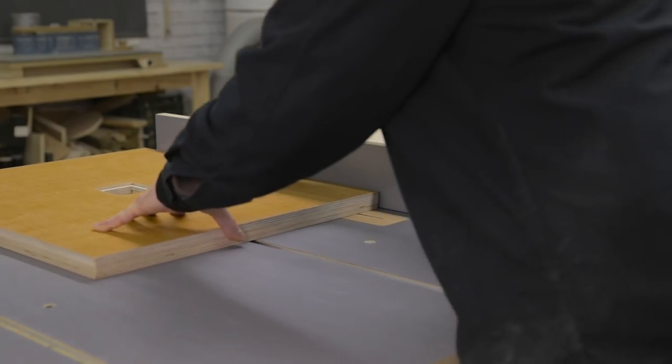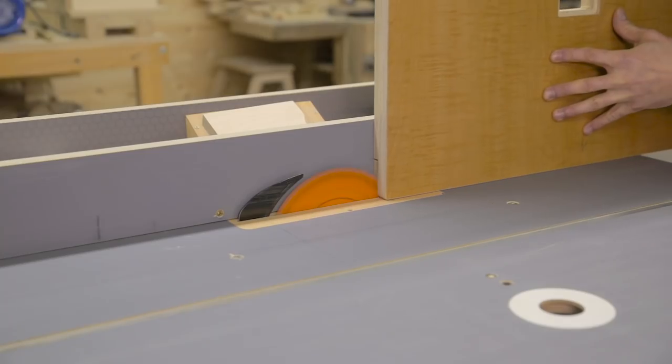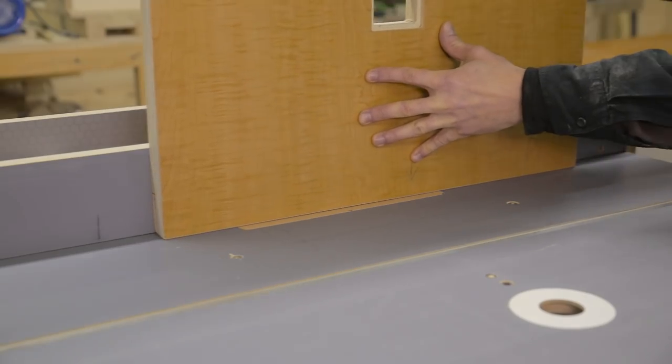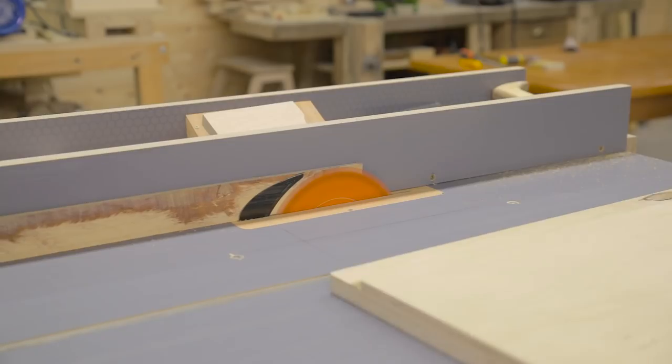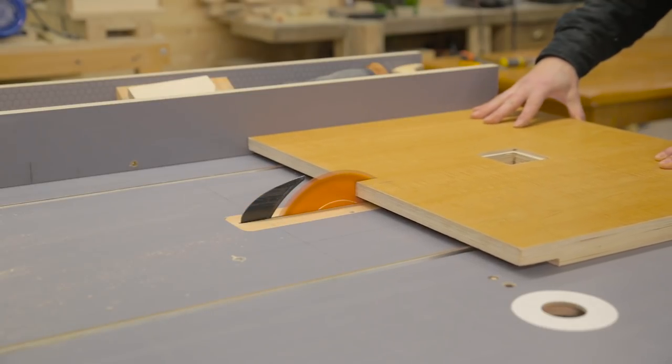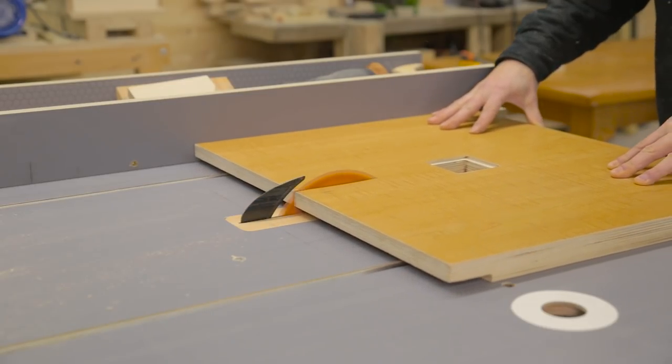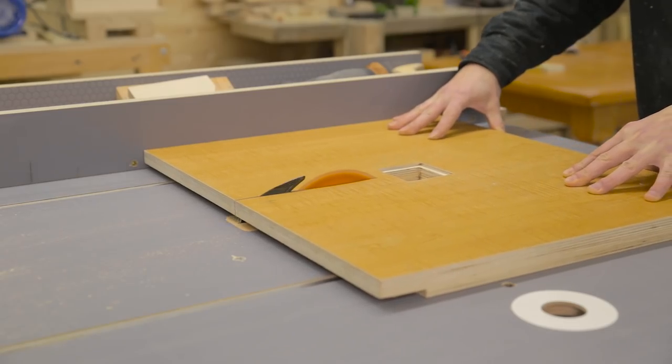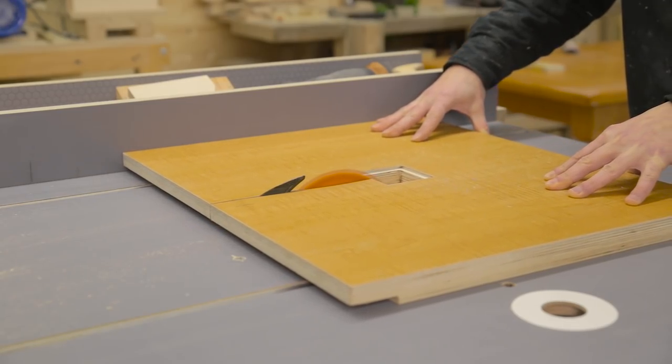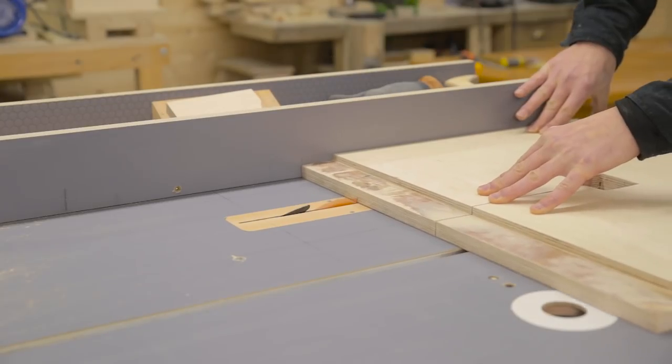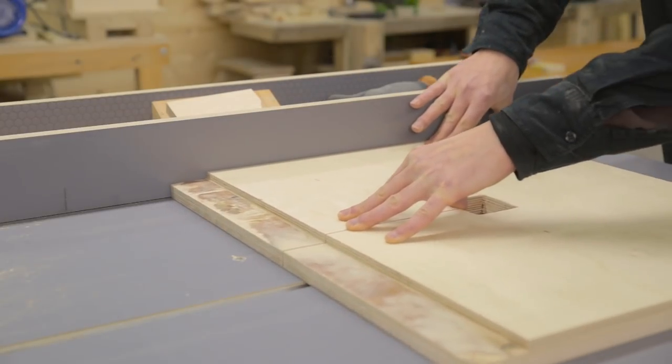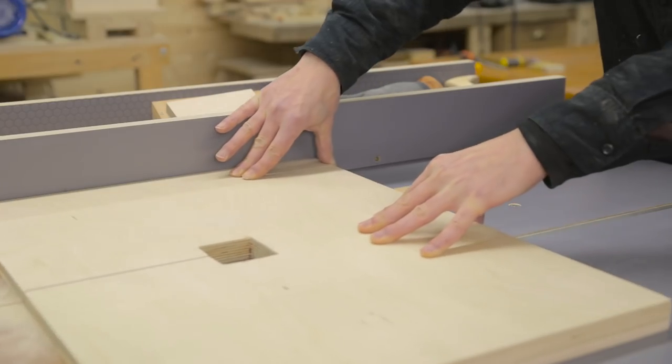With the table saw, I finish machining the table. This cut allows me to place the blade in the saw. And this other groove is for a U-shaped aluminum piece, which will allow me to use a sled.